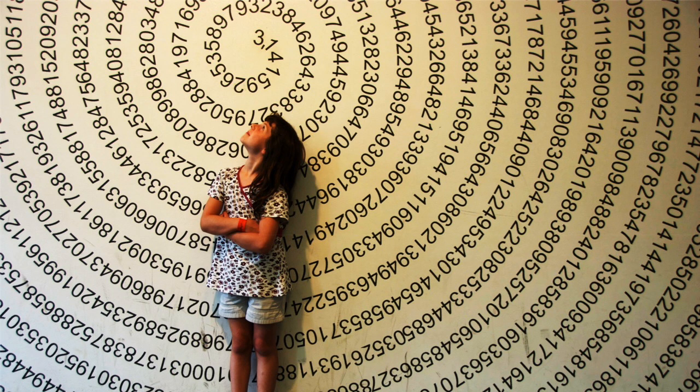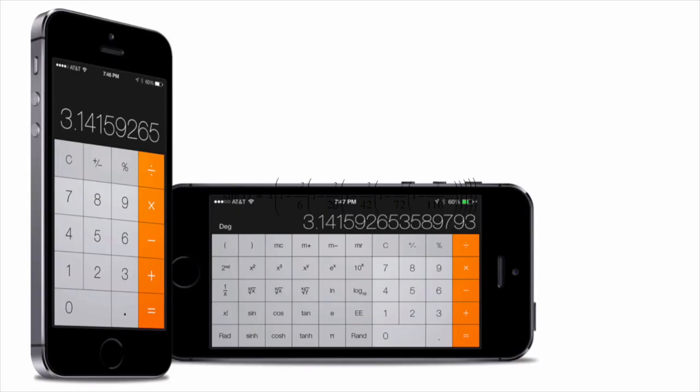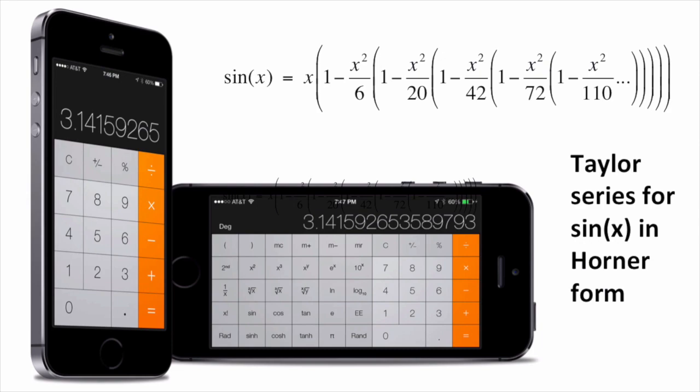Why can't we use this method to set pi records? To calculate the sine of a number with high precision takes a lot of computation. So a less costly method is needed to get millions of digits of pi.